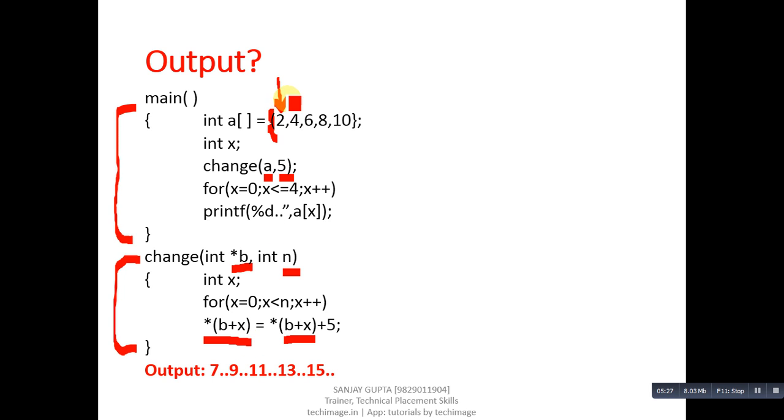And again it is assigned into *(b+x). It means the address which is containing 2 is updated by 2 plus 5, which is 7. So this position now contains 7. Then x++, value of x is 1, so base address will be incremented by 1.